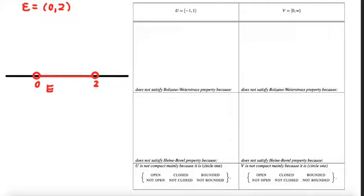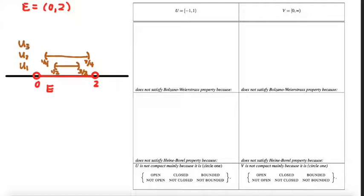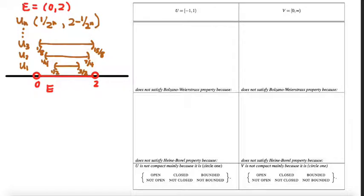Let's think about this as our cover. I'm going to take as my first set U₁ the interval from 1/2 to 3/2. Then for U₂, I'll nudge it out a little bit to go from 1/4 to 7/4. Then U₃, I'll nudge it out just a little bit more, going on powers of 2, so maybe this next one is 1/8 to 15/8, and so on. So the nth set in my sequence is the open interval (1/2ⁿ, 2 − 1/2ⁿ). That's the pattern of the open sets in my open cover for E.